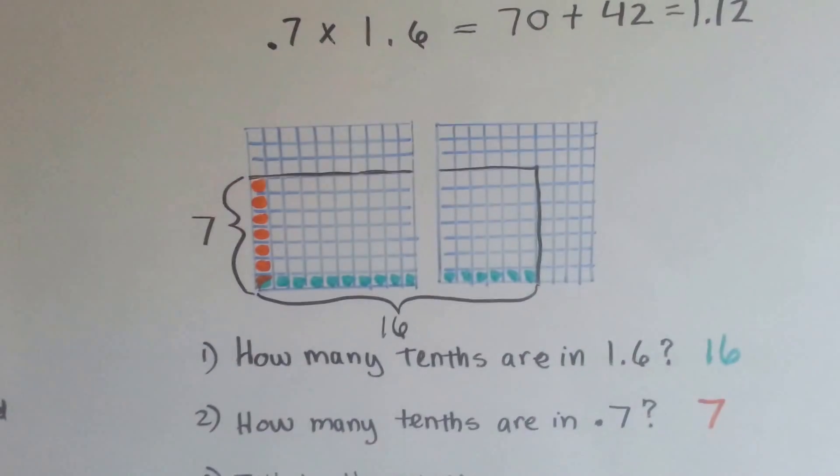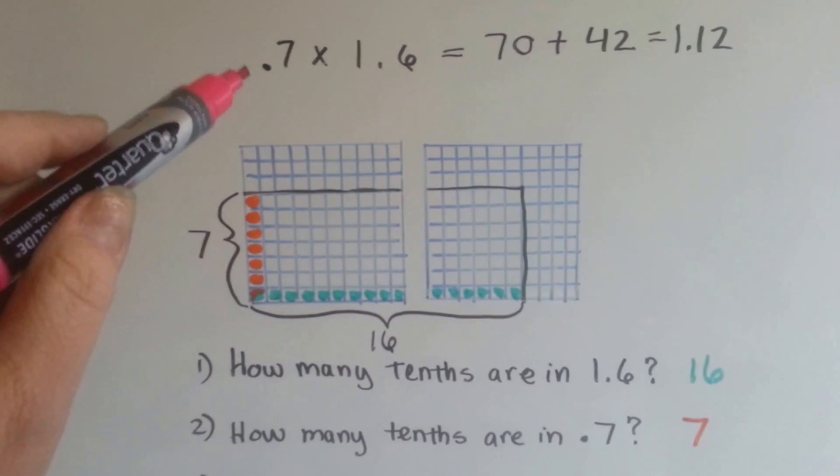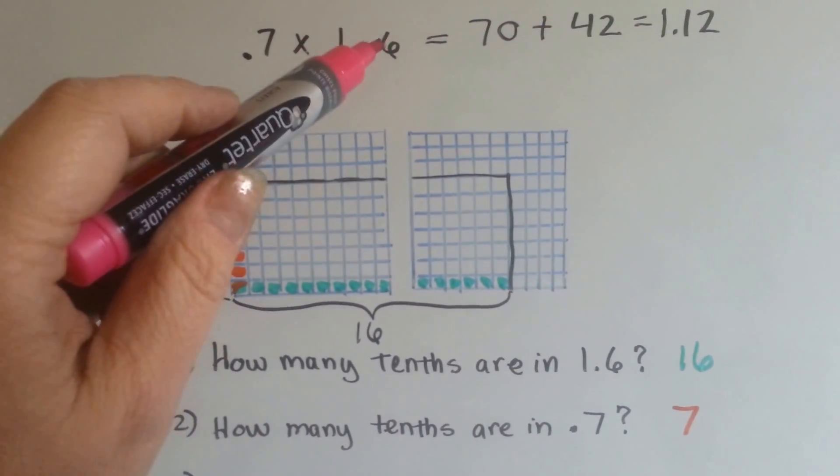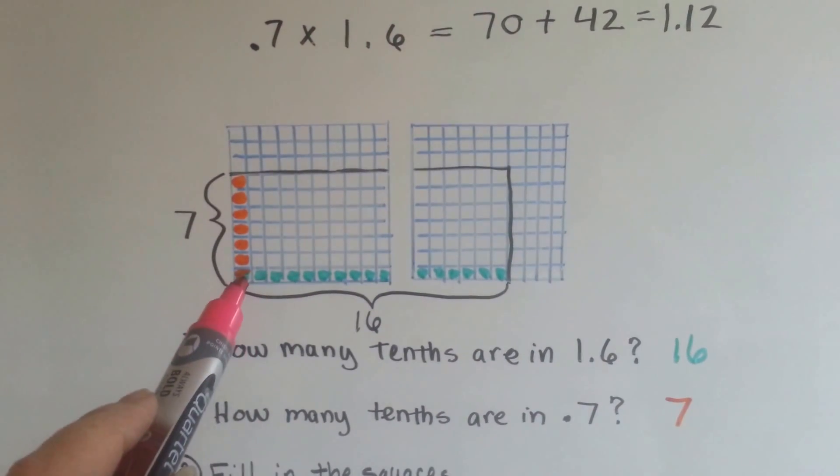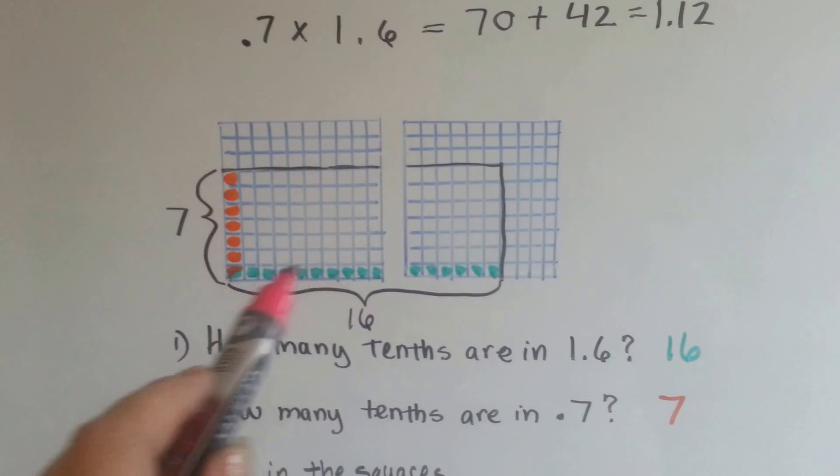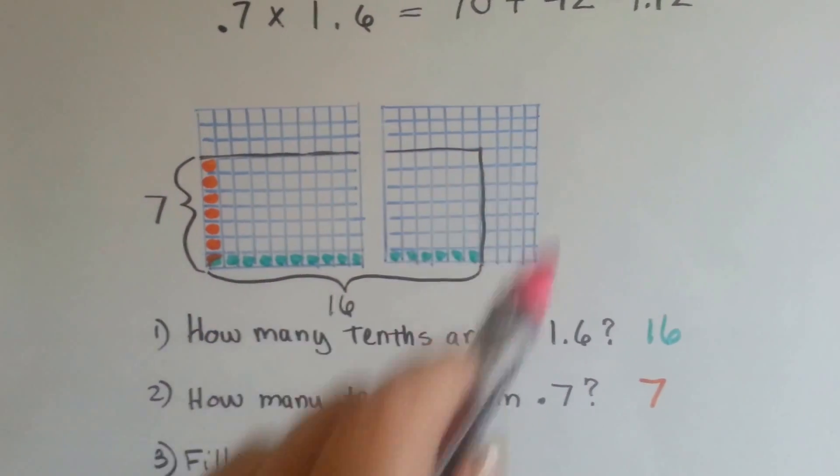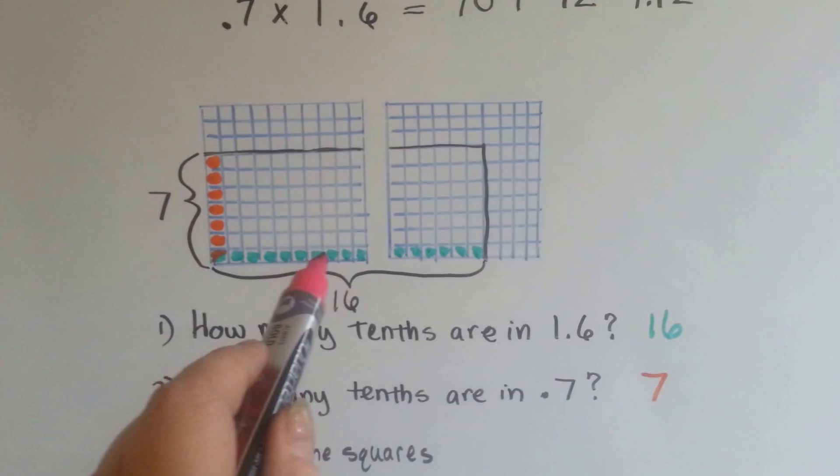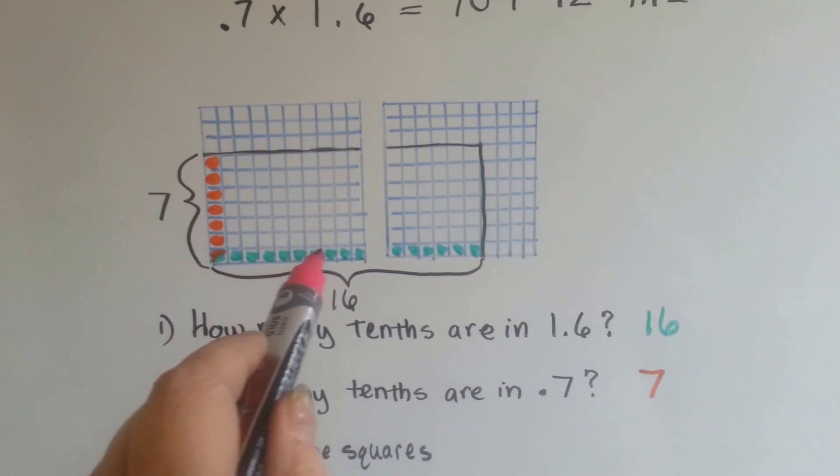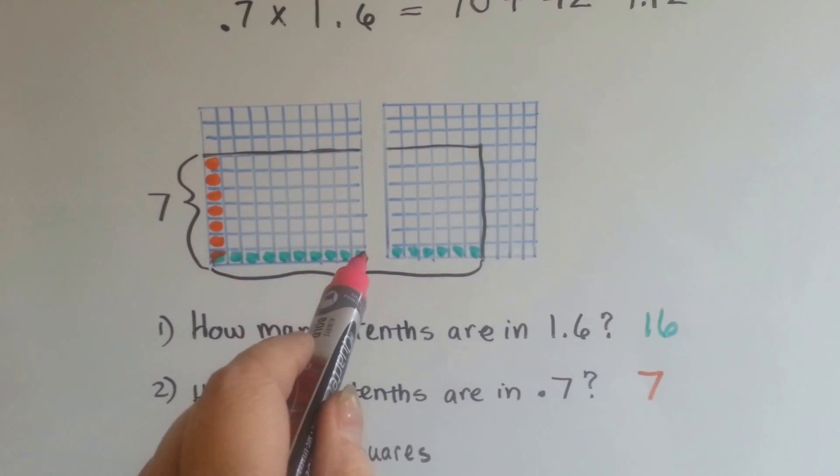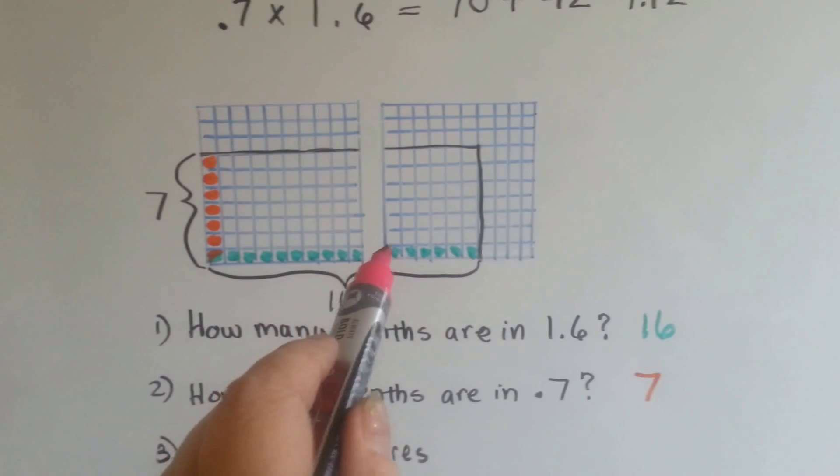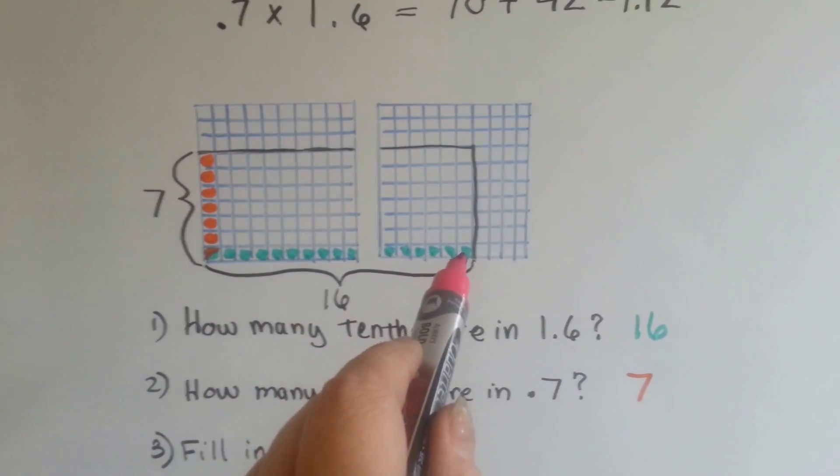So I'm going to show you in a drawing how it was done. The question is, what is 7 tenths times 1 and 6 tenths? So I counted one whole box, because this is a whole box and this is a whole box. So I colored in going in one row, going one column, going all the way this way. I filled in one entire one, and then I filled in 6 boxes on this one.